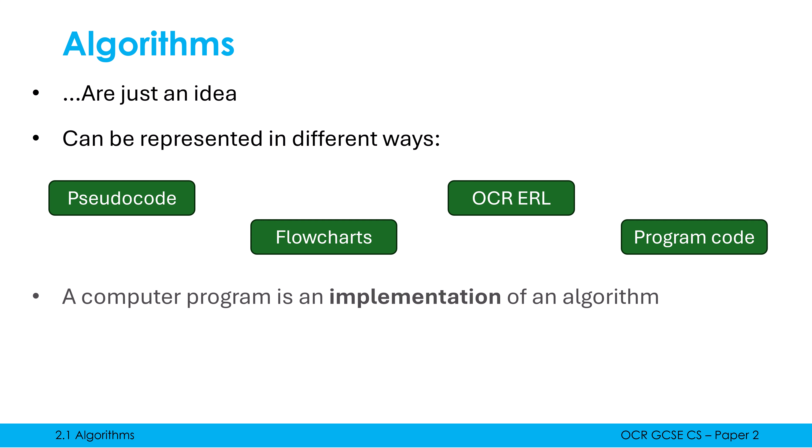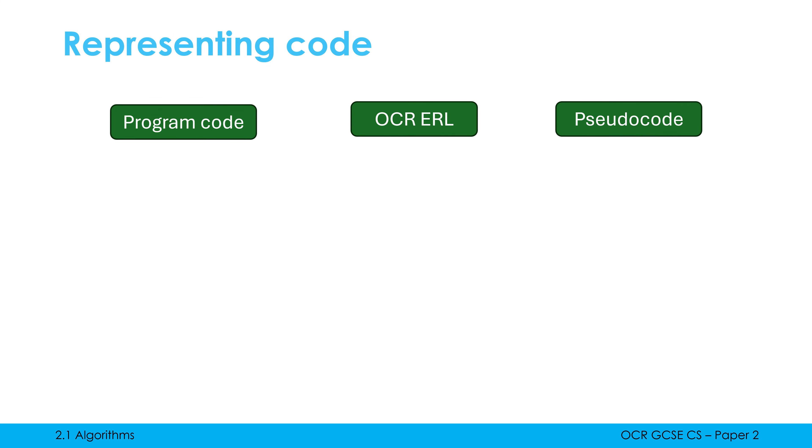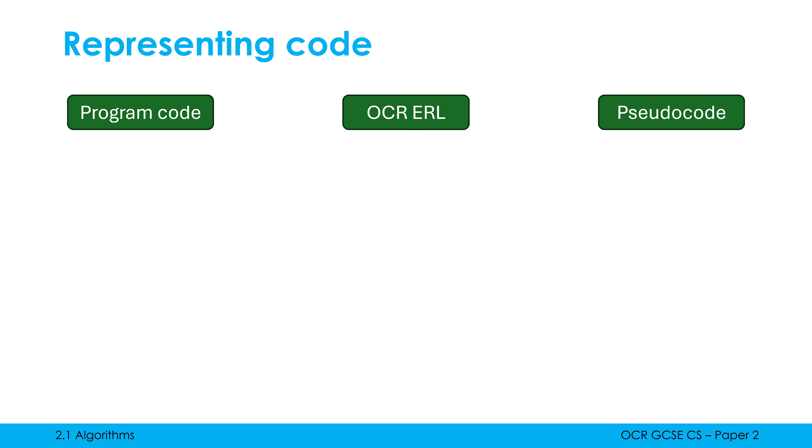A computer program itself is just an implementation of an algorithm. So someone has an idea for how to factorize a quadratic equation, and I then put it into a program to actually do this. Somebody has an idea for how to recommend YouTube videos — that gets put into a very complicated program which implements the idea. Now, flowcharts we'll cover in a future video, but let's focus on the three most code-related representations in Paper 2.